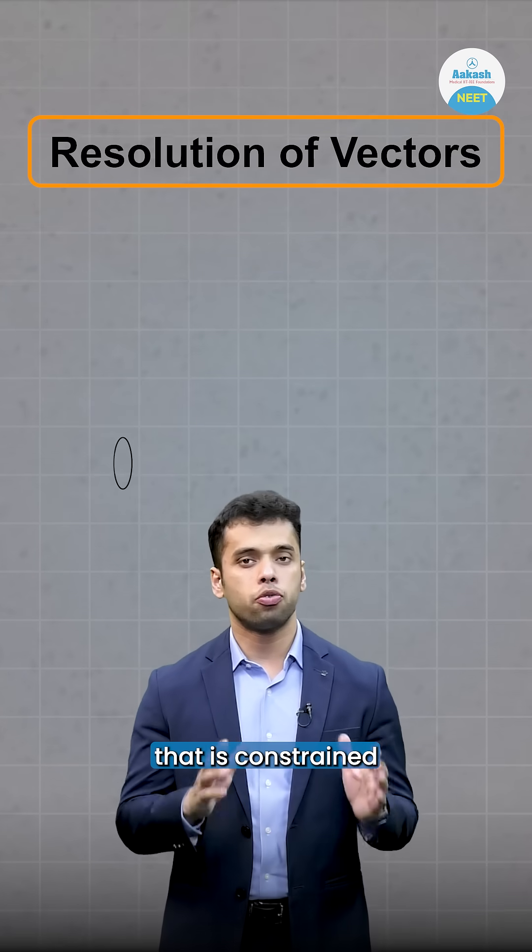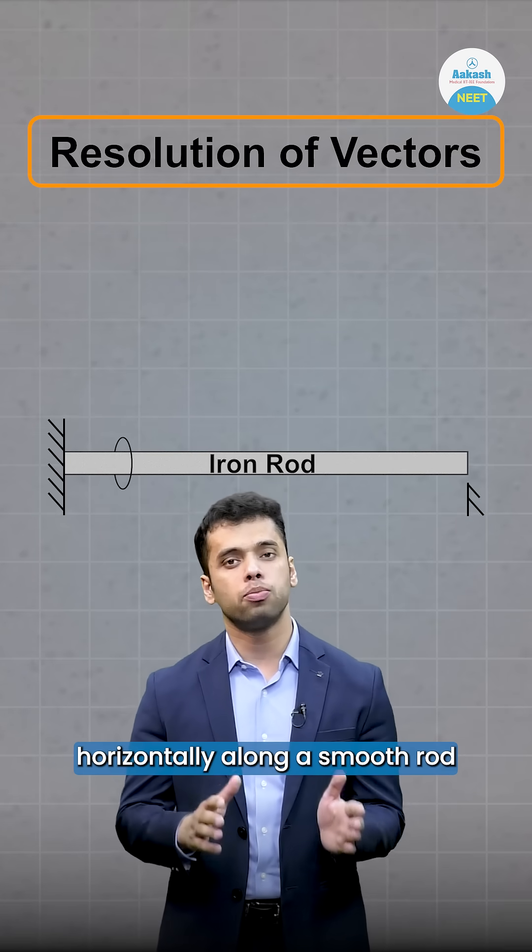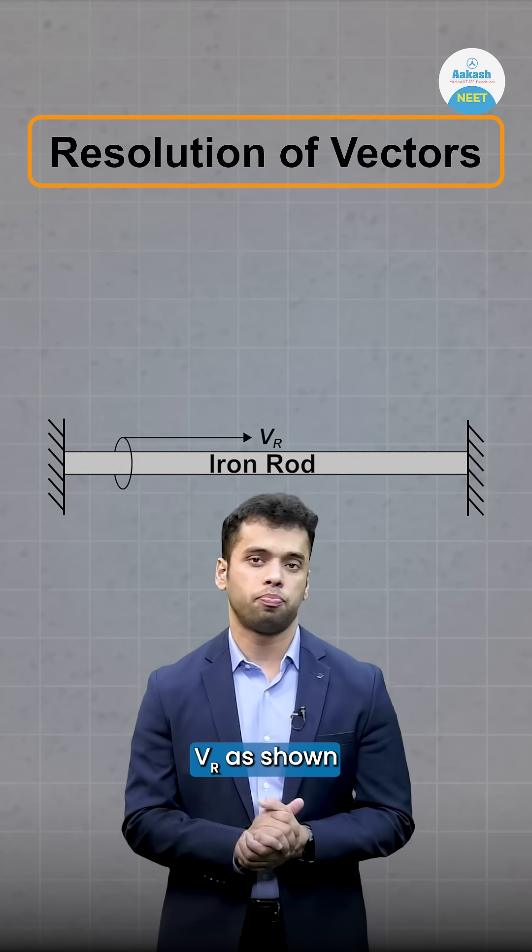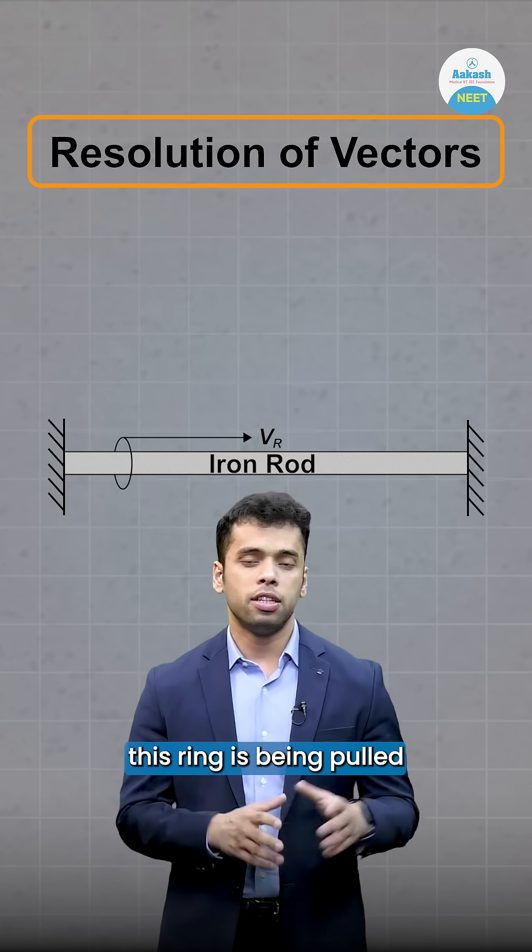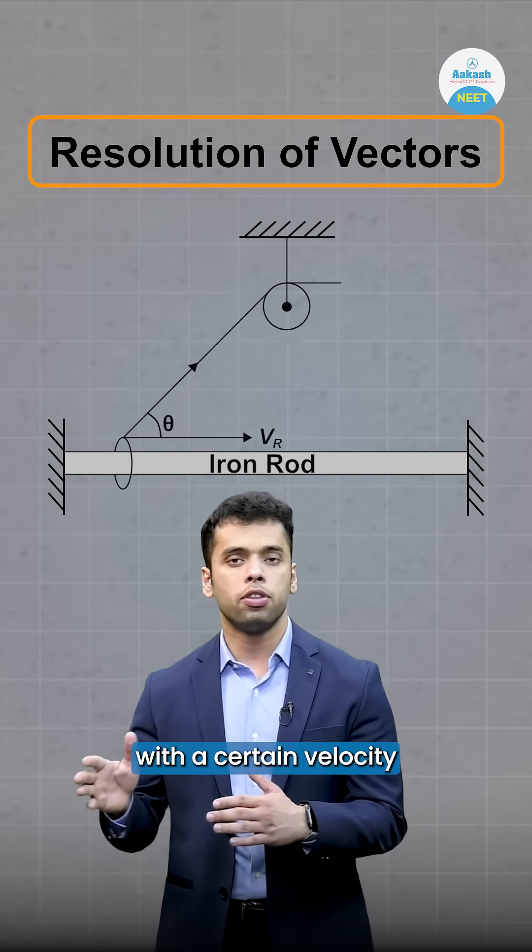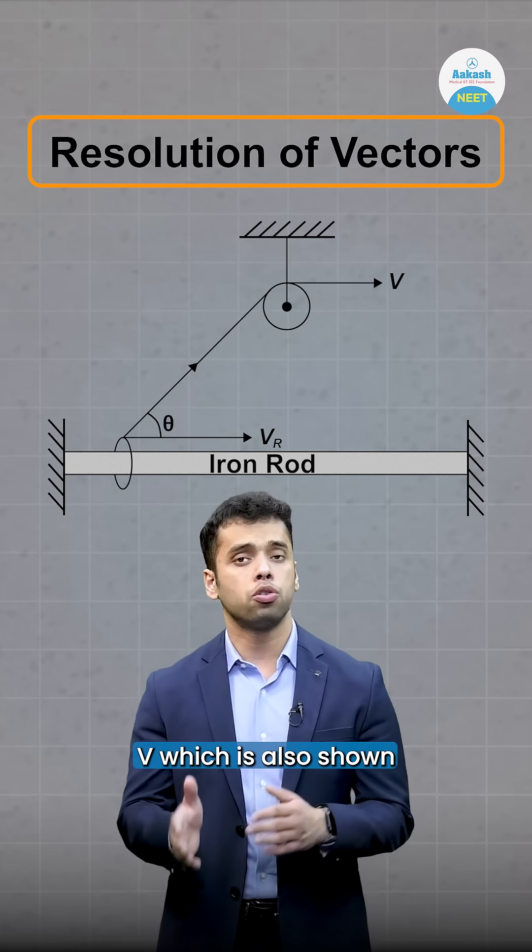Consider a ring that is constrained to move horizontally along a smooth rod with a certain velocity vr as shown. Right now, this ring is being pulled by an inextensible string with a certain velocity v, which is also shown in the diagram.